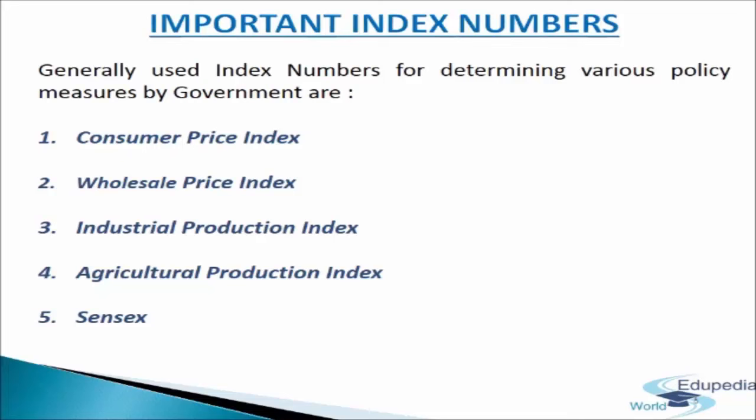These index numbers are: Consumer Price Index, Wholesale Price Index, Industrial Production Index, Agriculture Production Index, and Sensex. We will study all these index numbers one by one in our coming slides.